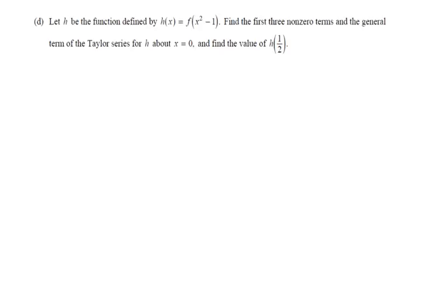Okay, so part d. We have h being the function defined by h(x) = f(x²-1). We want to find the first three non-zero terms and the general term of the Taylor series for h about x = 0.